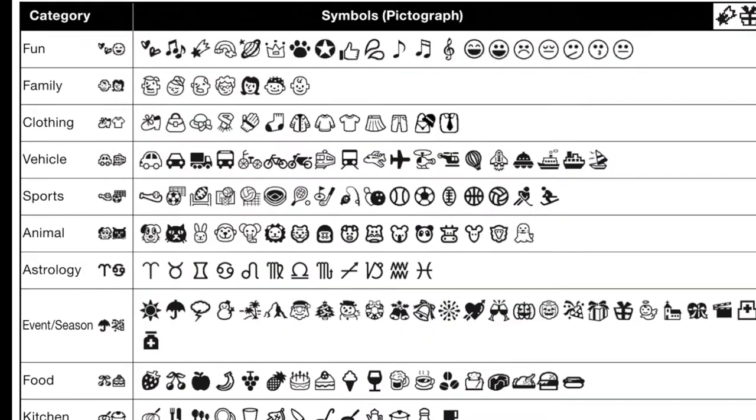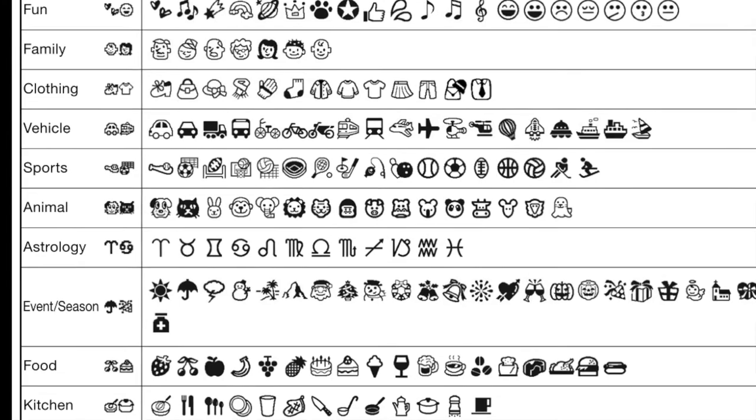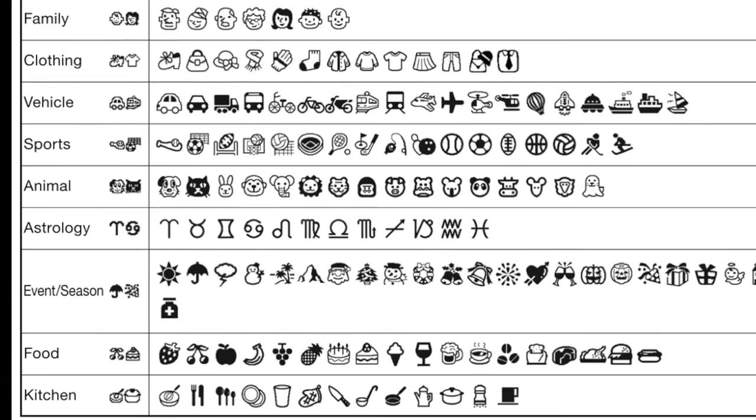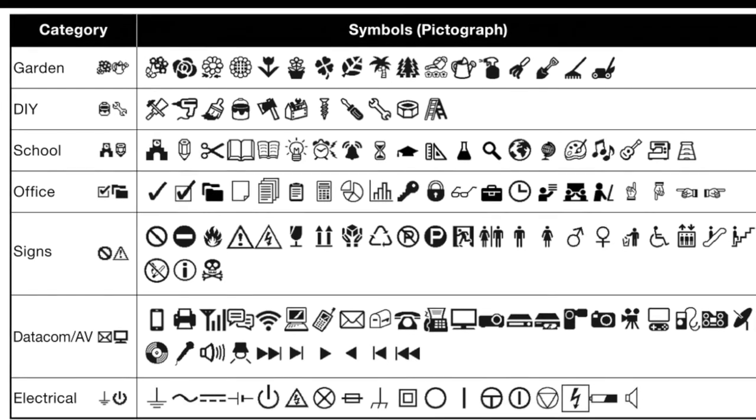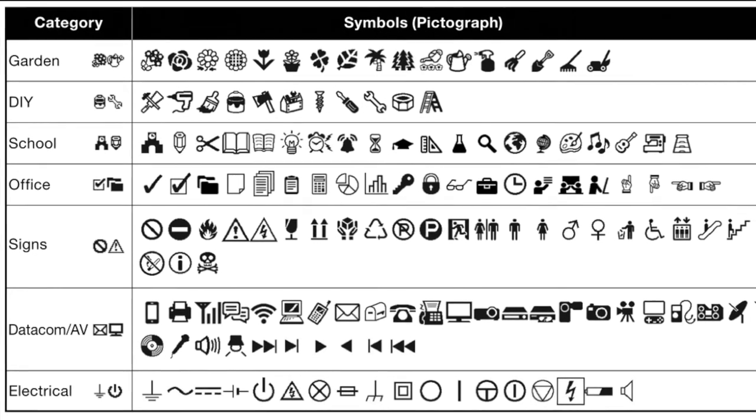For pictographs, you have 17 different categories, and they've got everything covered — from fun, family, food, and office to anything you can think of. I'm going to include a great chart so you can get a good idea of all the pictures by category without having to scroll through hundreds of different symbols. The pictograph categories range from fun and astrology to food, garden, schools, and electrical.